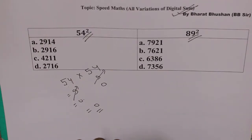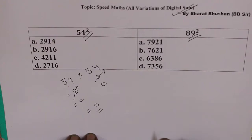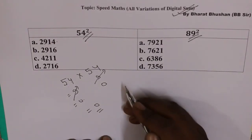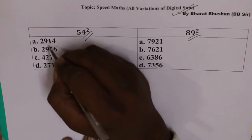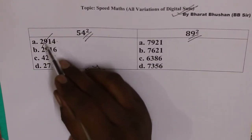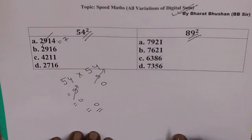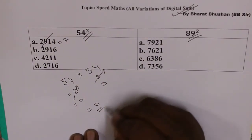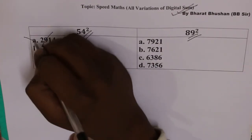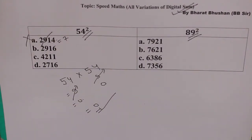So 0 into 0 is 0. The digital sum for 54 square is 0. We'll check which option has a digital sum of 0. We call digital sum to be elimination of 9. So first we'll eliminate all 9s — 9 eliminate kar diya — and sum the remaining digits: 2 plus 1 plus 4 is 7. Option A has digital sum 7, and 54 square ka digital sum is 0, so option A can never be the answer.